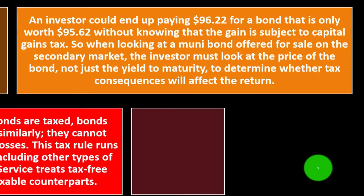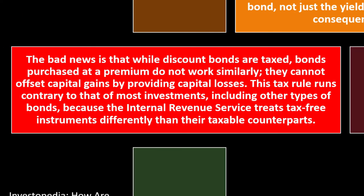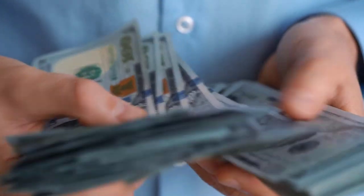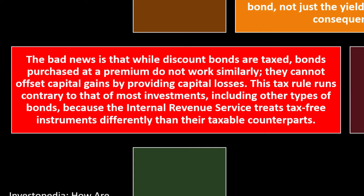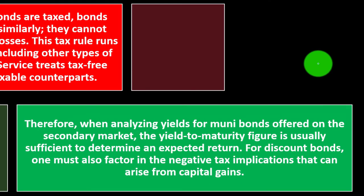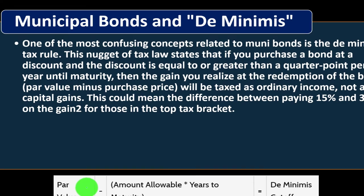The bad news is that while discount bonds are taxed, bonds purchased at a premium do not work the same way — they cannot offset capital gains by providing capital losses. You'd think the opposite would be true when paying more than the face amount, but no. This tax rule runs contrary to that of most investments including other types of bonds, because the IRS treats tax-free instruments differently than their taxable counterparts. Therefore, when analyzing yields for bonds on the secondary market, the yield-to-maturity figure is usually sufficient for expected return on par bonds, but for discount bonds one must also factor in negative tax implications from capital gains.